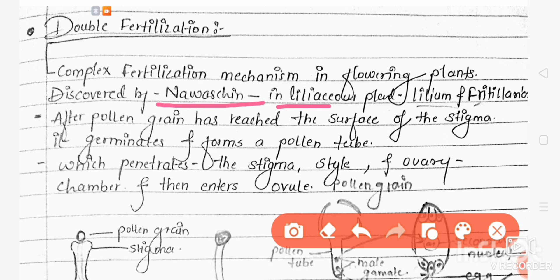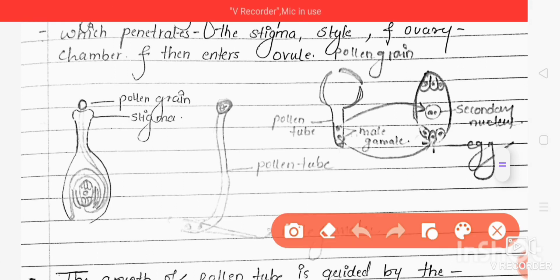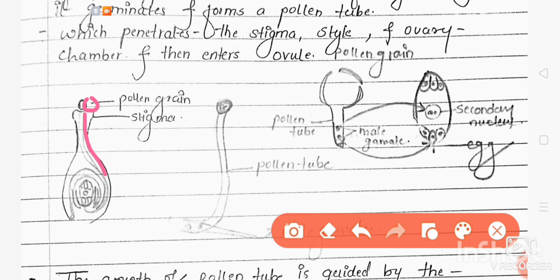It was discovered in Liliaceae plants like Lilium or Fritillaria. When the pollen grain lands on the stigma of the gynoecium, it forms a pollen tube. There will be two male gametes in this pollen tube.